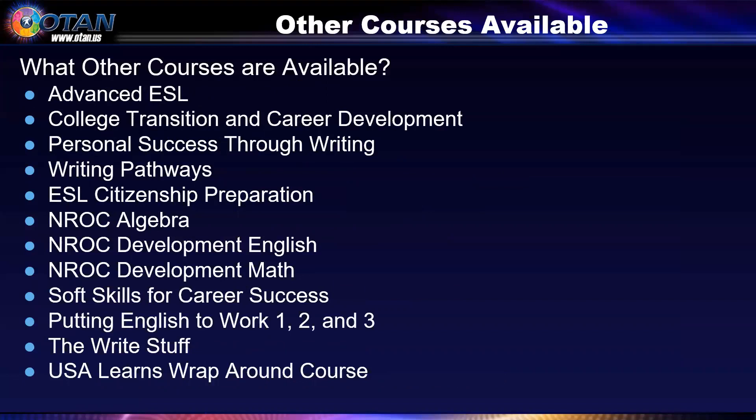As you explore the adultedcourses.org site, you will see many courses in a variety of departments and English levels. Other courses available include Advanced ESL, College Transition and Career Development, Personal Success Through Writing, Writing Pathways, ESL Citizenship Preparation, NROC Algebra, NROC Development English, NROC Development Math, Soft Skills for Career Success, Putting English to Work 1, 2, and 3, The Right Stuff, and USA Learns Wrap Around Course.